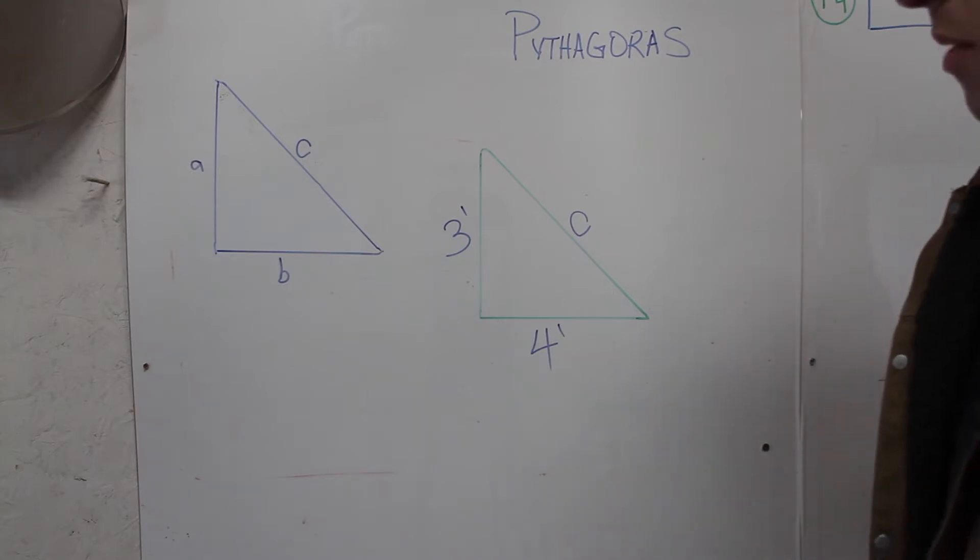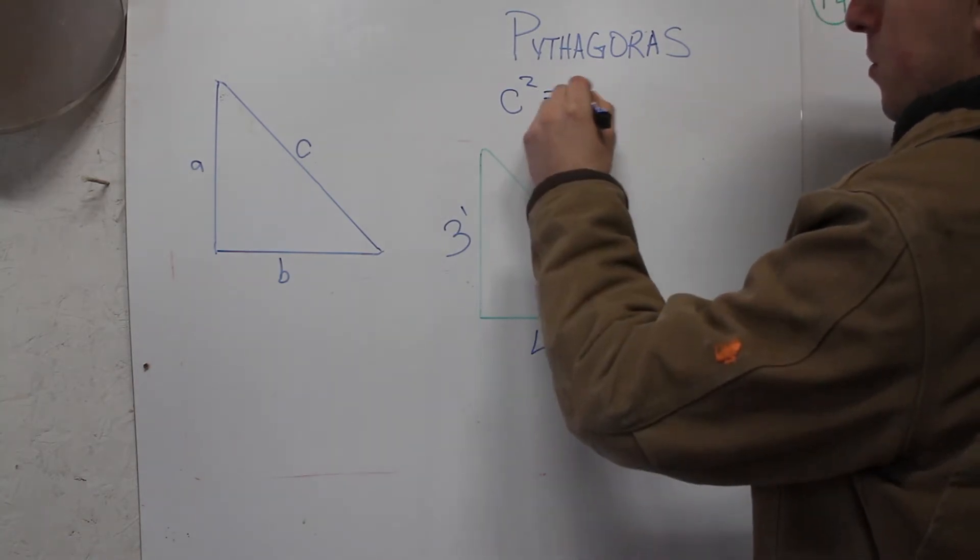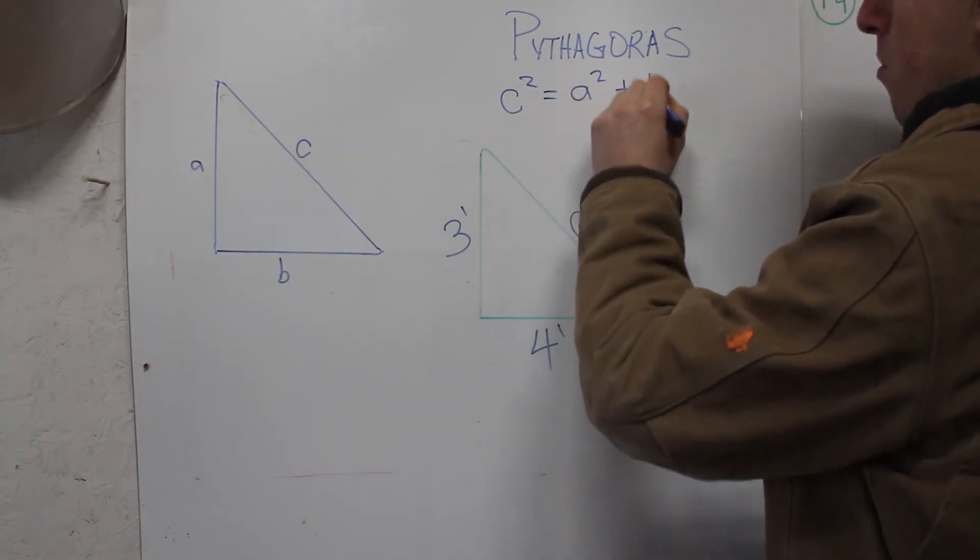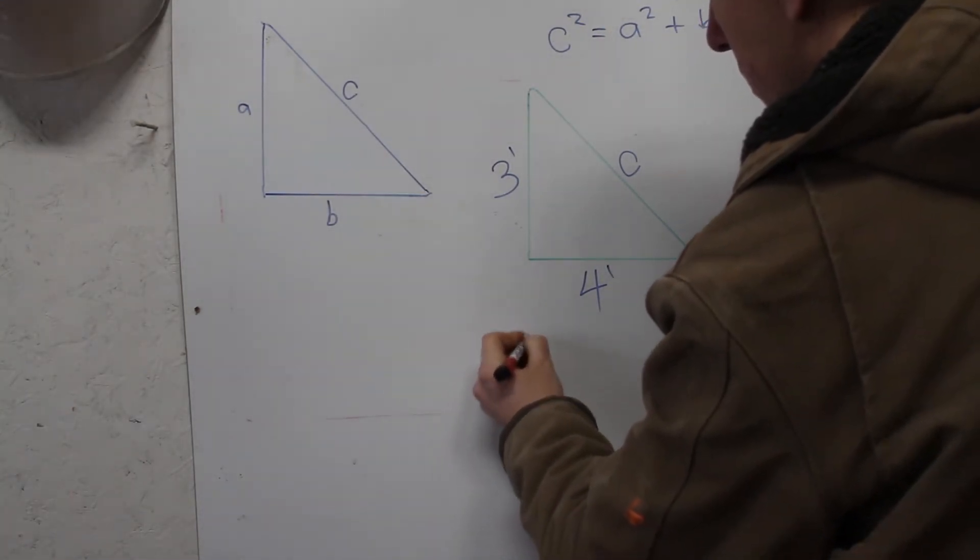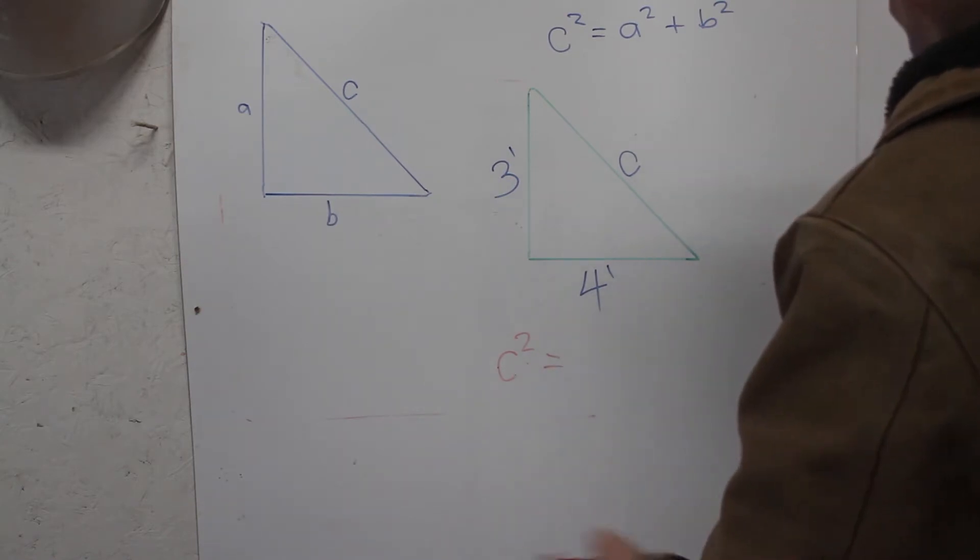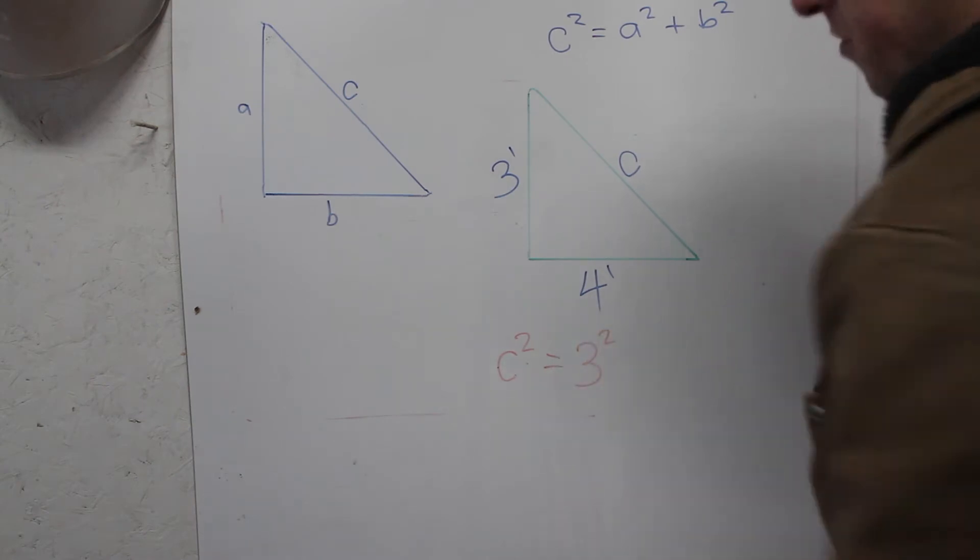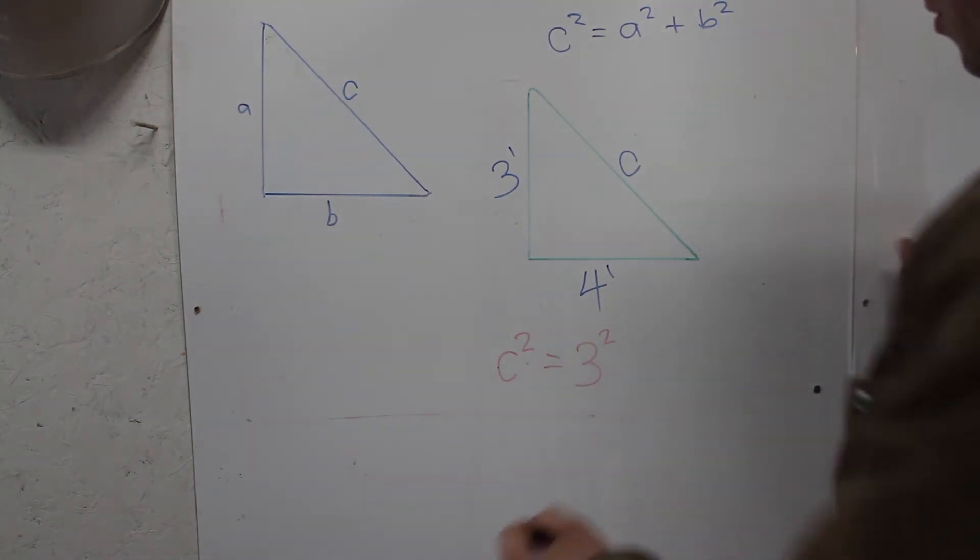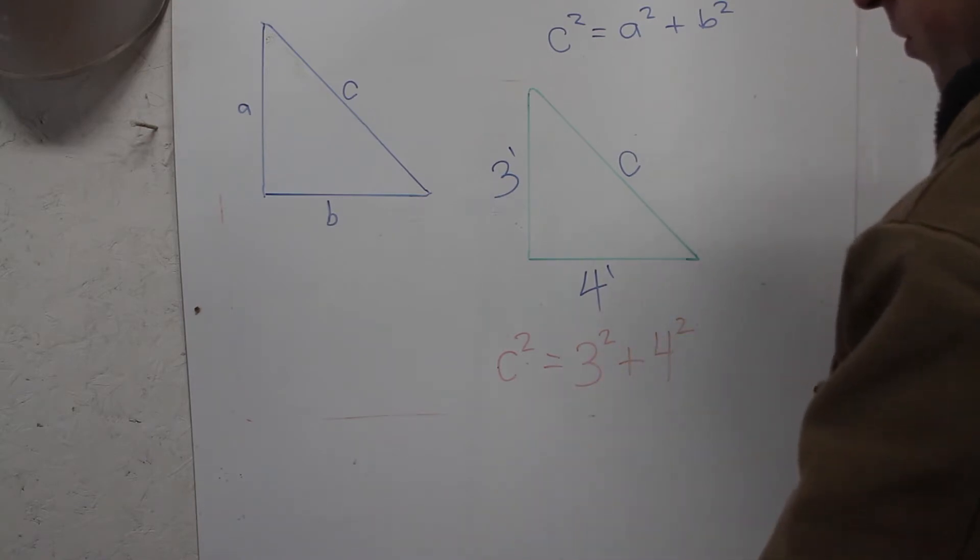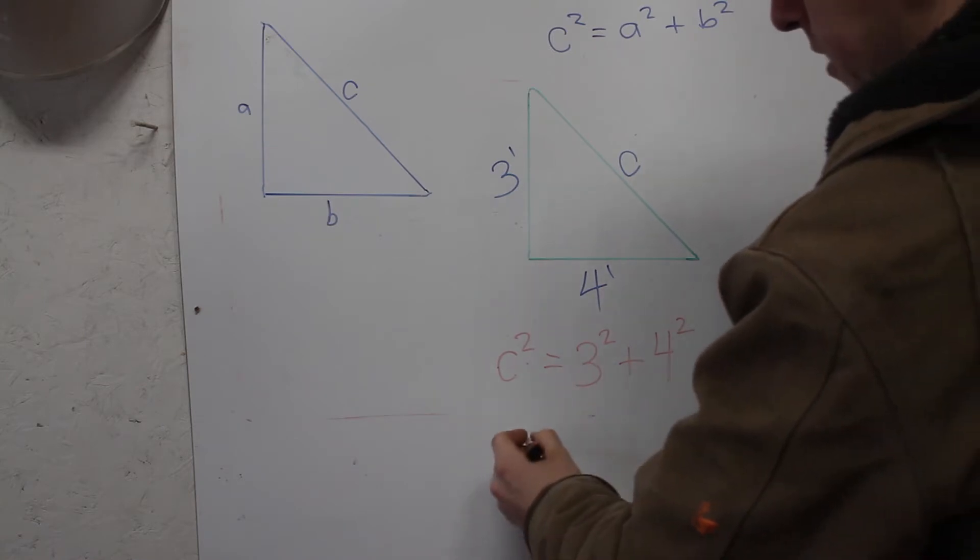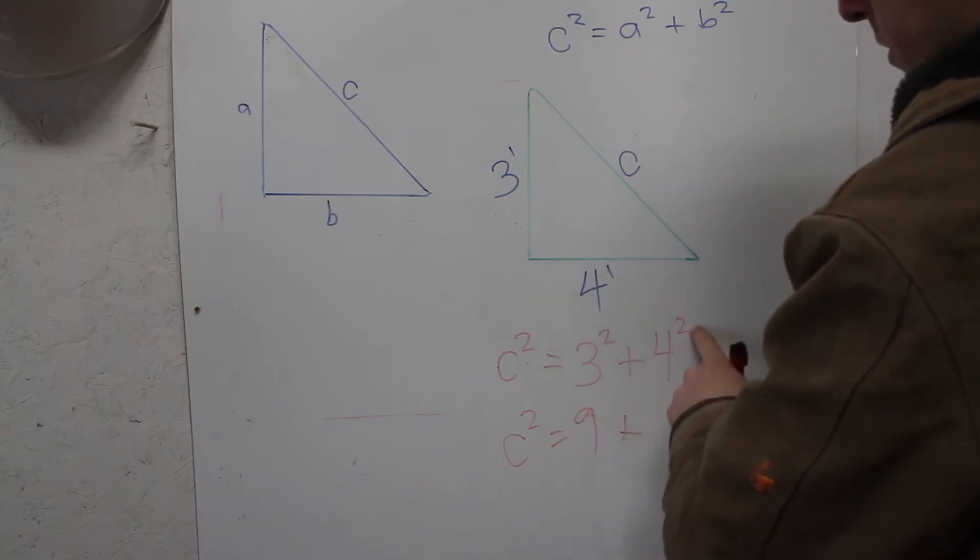So the Pythagoras theorem is based on the idea of C squared is equal to A squared plus B squared. So let's put this into our example here. C squared, which is our hypotenuse, is equal to A squared - that's three to the power of two, it means three times itself, so three times three - plus B squared, which is four to the power of two, which is four times four. Go down to the next level: C squared equals three times three is nine, four times four is 16.